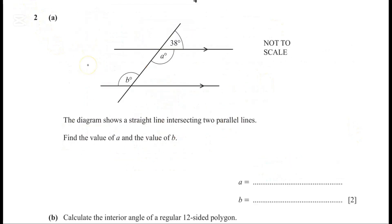Question 2A. The diagram shows a straight line intersecting two parallel lines. Find the value of a and b. Since this is a transversal and a straight line, these two angles are on a straight line. So a is 180 minus 38, which gives 142 degrees. And a and b are alternate angles because they are in parallel lines. So b equals a, therefore b is also 142 degrees.